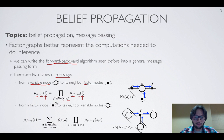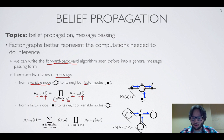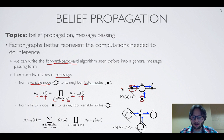When we take the product of messages, we only take the messages from factors F' which are not F but are neighbors connected to S. In this illustration, the message from S to F is the product of the messages from the two other factor nodes connected to S — one F' and another F'.